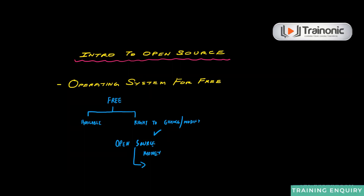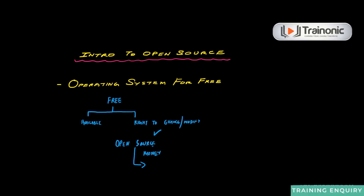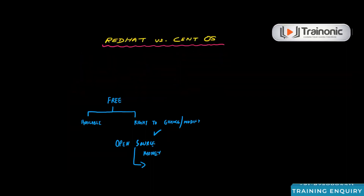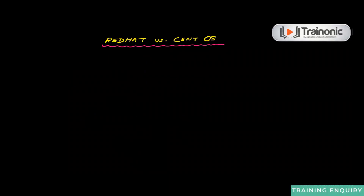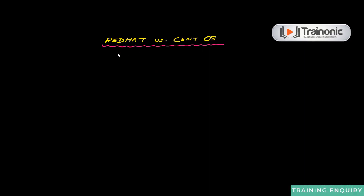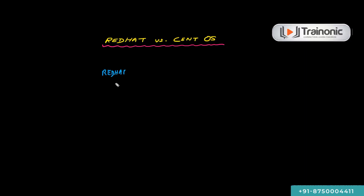It is a free operating system, meaning you're not only going to get the operating system for free, but you can have the rights to modify that operating system the way you want it to be. For example, let's talk about Red Hat versus CentOS. Red Hat is the company that creates a commercial Linux distribution that they sell for money. However, because they are using open source products,